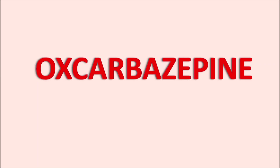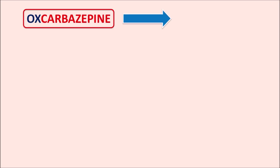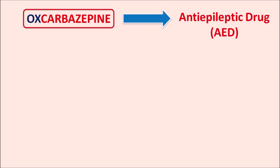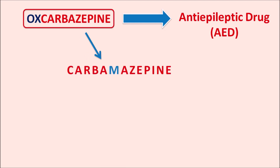Today we are going to discuss oxcarbazepine. This drug is a new generation anti-epileptic drug derived from the old generation anti-epileptic agent carbamazepine. We can find the letter 'ox' extra in the name of this drug.